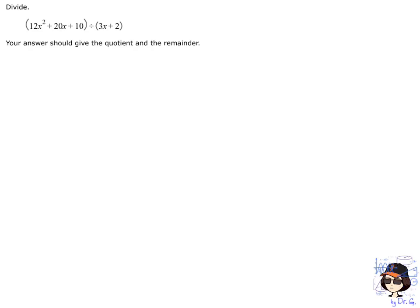So in this one, we're taking the polynomial 12x squared plus 20x plus 10, and we're dividing it by the polynomial 3x plus 2. And in the directions, it asks us to give the quotient and the remainder.